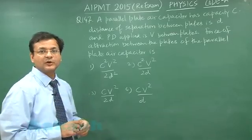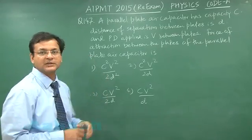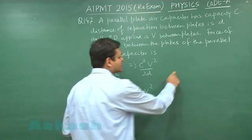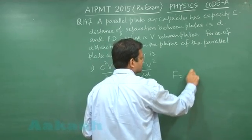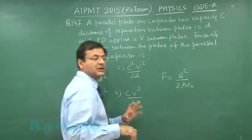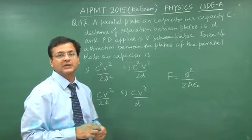In the next question, question 147, which is simply based on a formula - the force of attraction between capacitor plates. This is a standard formula: q² by 2Aε₀, but the notations given in the question are different.